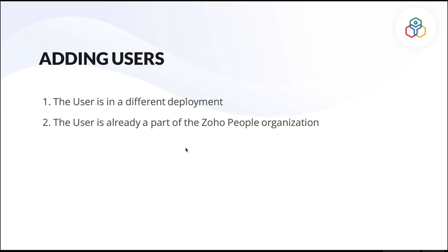For a smooth and successful attempt, let's take a look at some best practices or troubleshooting tips. The first issue is the user is in a different deployment. In this case, the data center in which you and your employee accounts are held is different. For example, you have your organization set up in people.zoho.com and the employee has created a new account in people.zoho.eu or people.zoho.in or any other deployment.